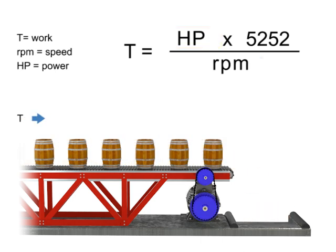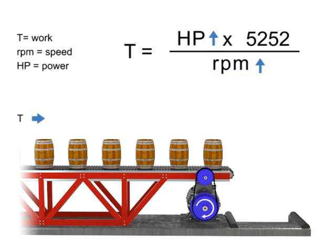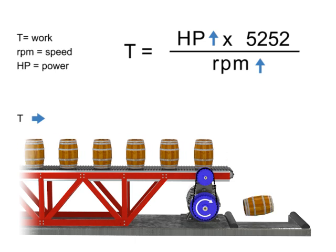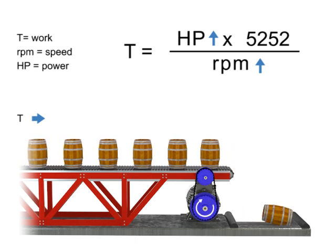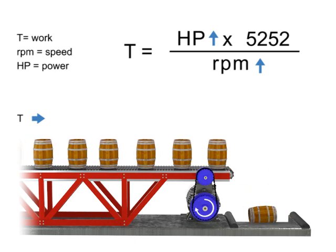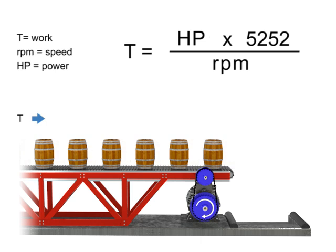Let's say we wish to keep torque constant but want to increase the production of barrels. If the torque, or number of barrels on the conveyor belt, remains constant but speed increases, then the horsepower of the motor also increases. In other words, a more powerful motor is required to produce the same amount of torque more quickly. Similarly, the opposite is true: if we wish torque to remain constant and decrease speed, then the horsepower of the motor also decreases.